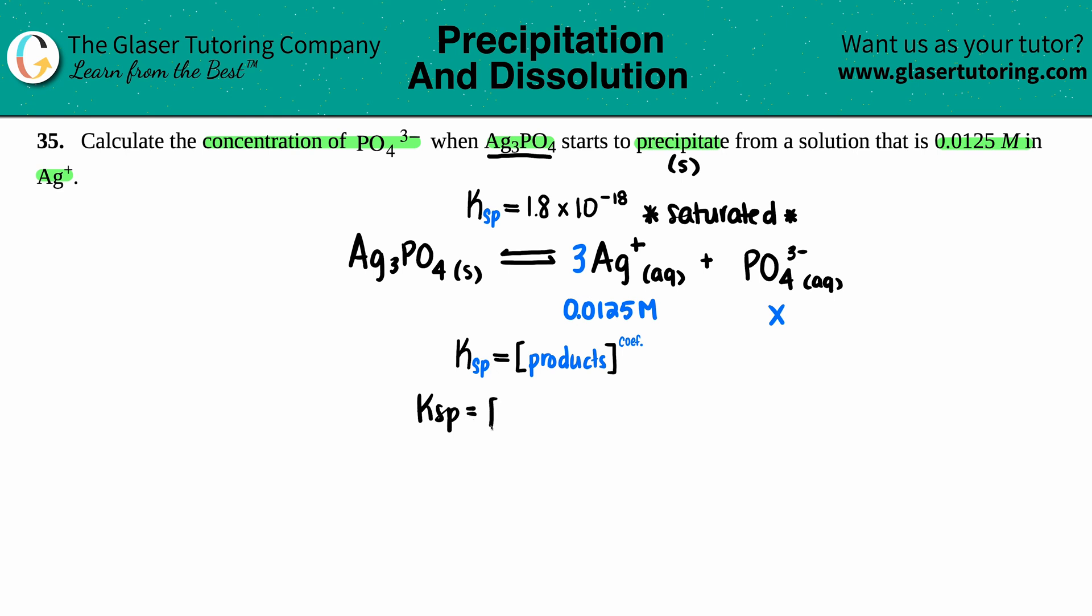Ksp equals the concentration of Ag⁺ times the concentration of PO4³⁻. Now let's watch out for those coefficients. I notice that I have a three in front of the silver, so I have to take the silver and raise it to the third power. I can raise the phosphate to the first but you don't have to do that.